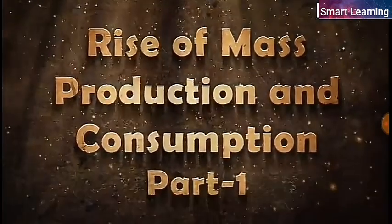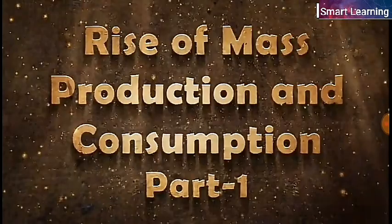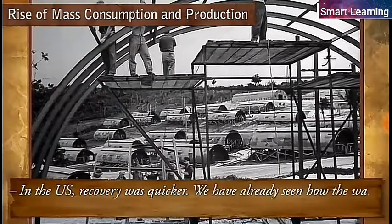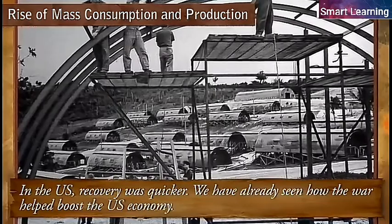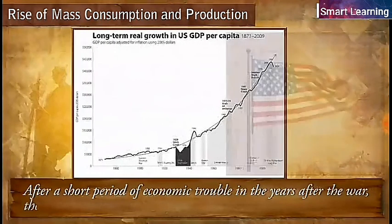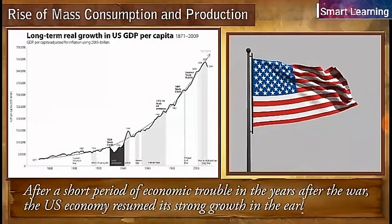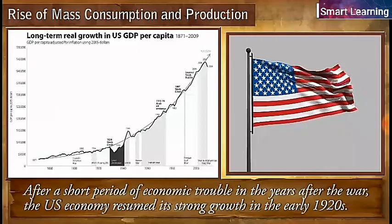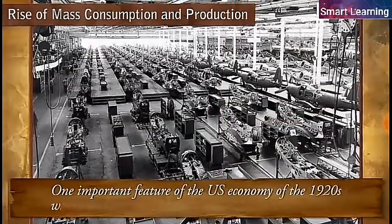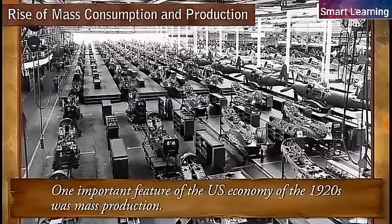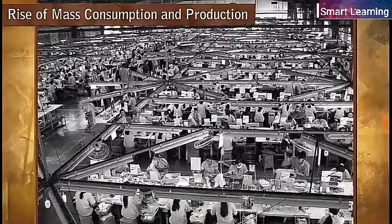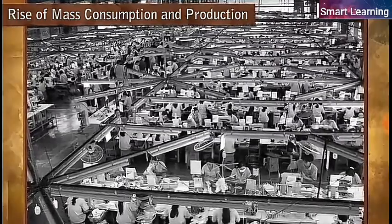Rise of mass production and consumption. In the US, recovery was quicker. We have already seen how the war helped boost the US economy. After a short period of economic trouble in the years after the war, the US economy resumed its strong growth. In the early 1920s, one important feature of the US economy was mass production. The move towards mass production had begun in the late 19th century, but in the 1920s it became a characteristic feature of industrial production in the US.